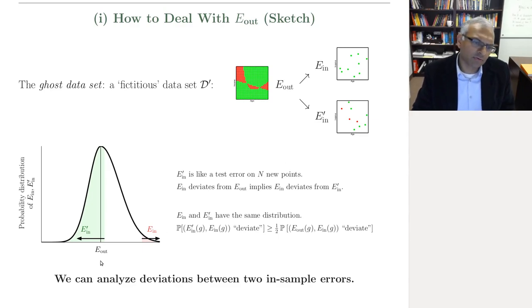And so in this picture here where you see this probability distribution that looks a little bit like a Gaussian, let's consider the situation where E_in deviates from E_out. And so we're interested in bounding the probability that E_in deviates from E_out by a large amount. Now let's look at what's happening with E_in prime.